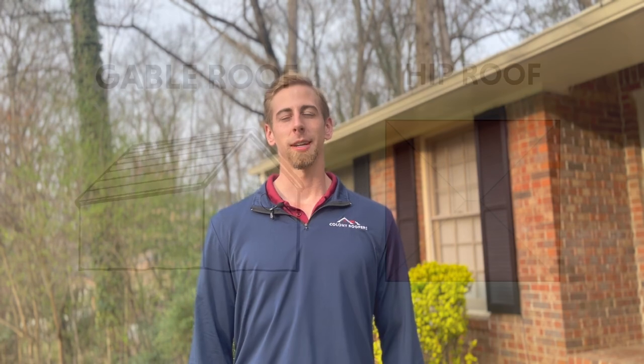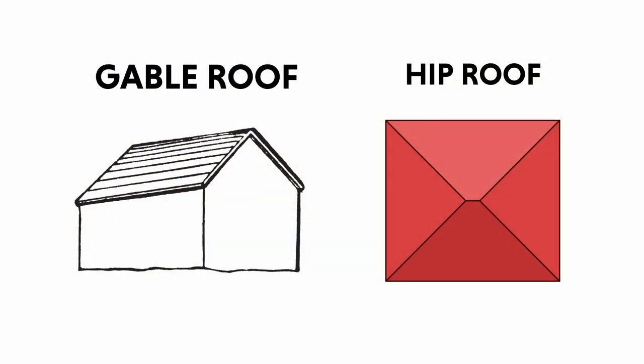Appearance is the main difference between hip and gable roofs. Gable roofs have flat sides that continue above the exterior walls of a home, whereas hip roofs show slopes no matter what angle you view the roof from, which some people prefer.